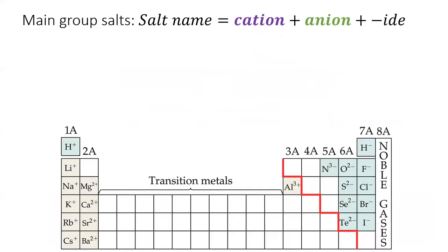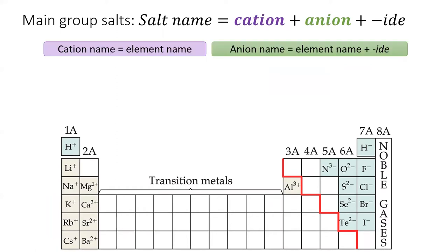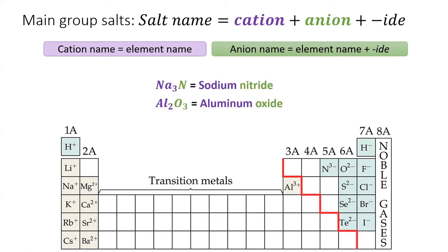Main group names are different for cations and anions. Cations have the same name as the element. Anions have the same name as the element except with the suffix "-ide." So the ionic compound formed between sodium and nitrogen is sodium nitride. The compound formed from aluminum and oxygen is aluminum oxide.